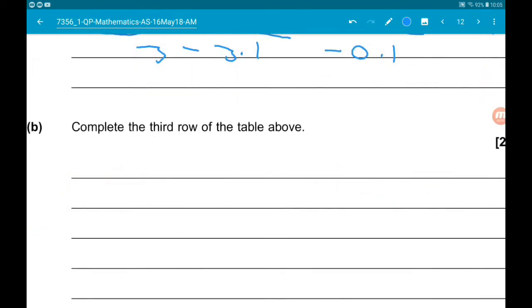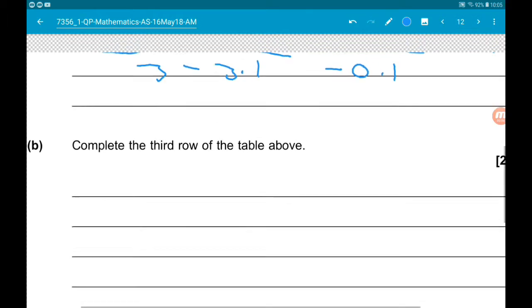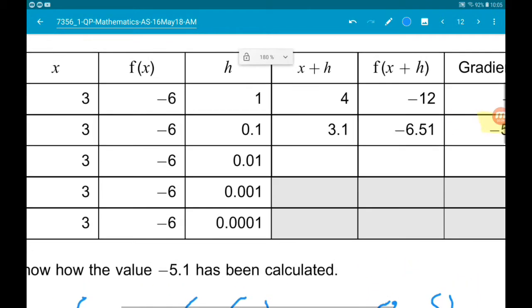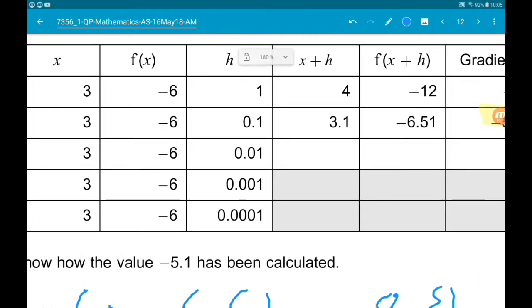Part B wants us to complete the third row of the table. In the third row, we are using h is 0.01.